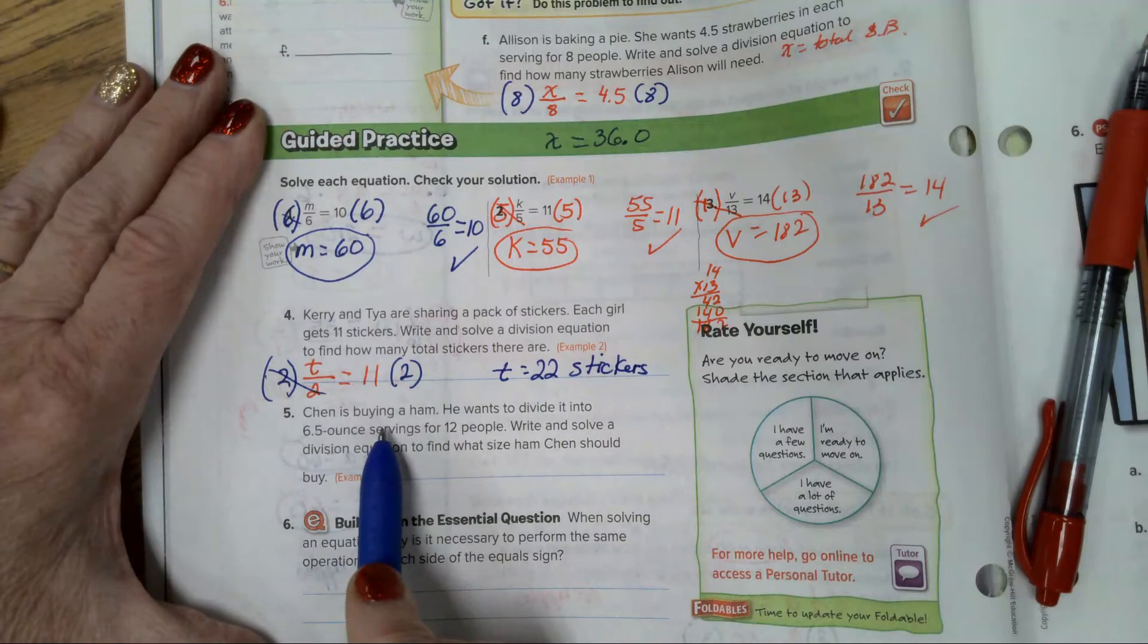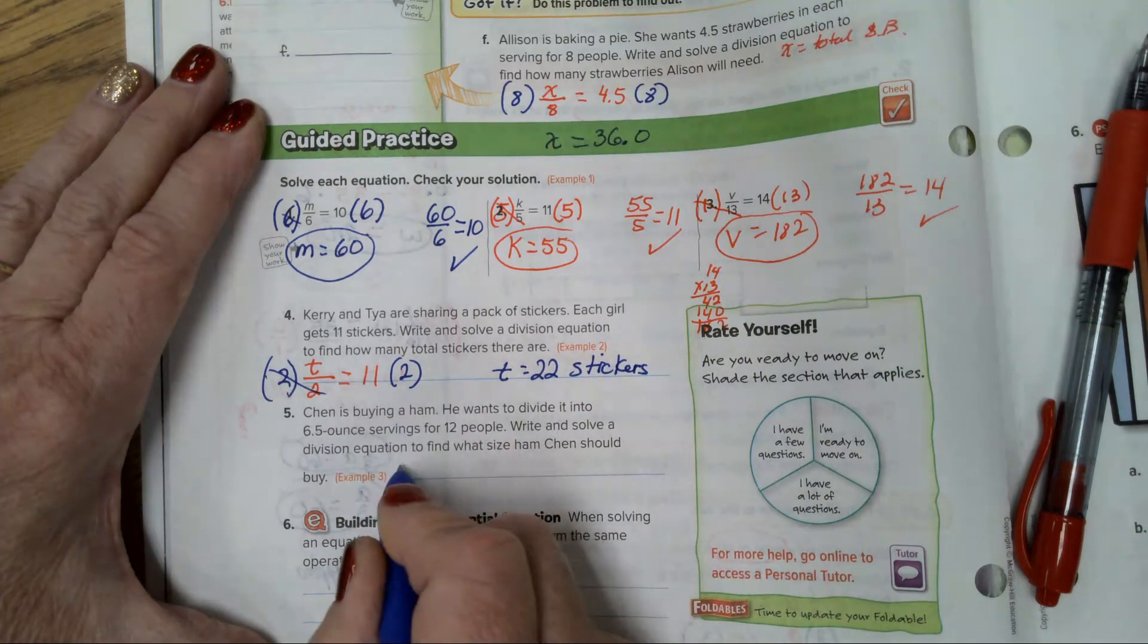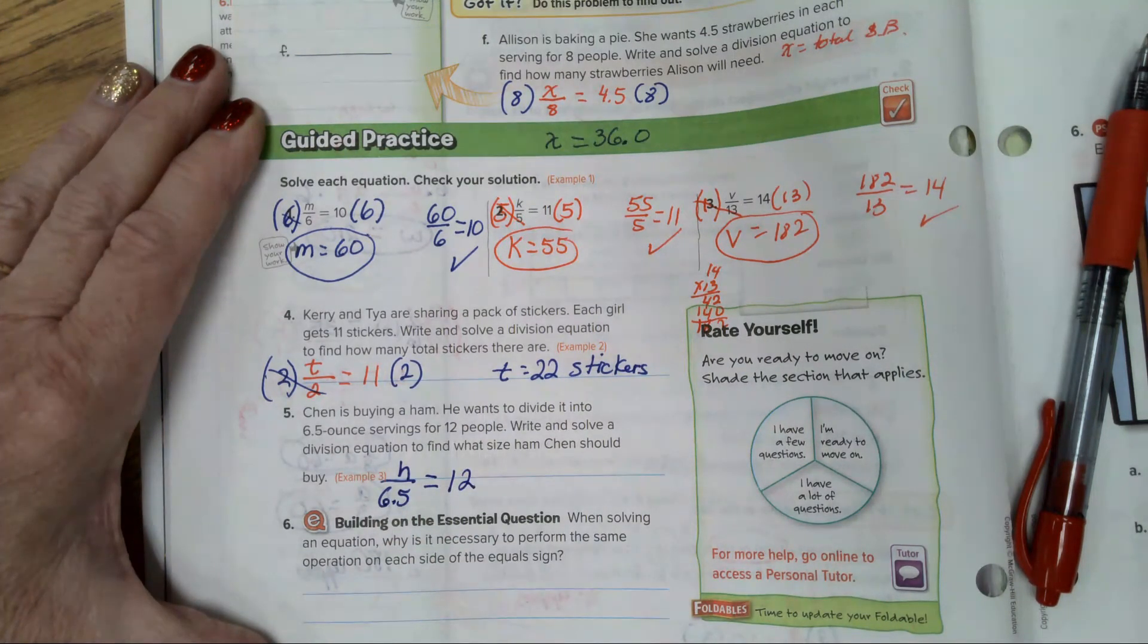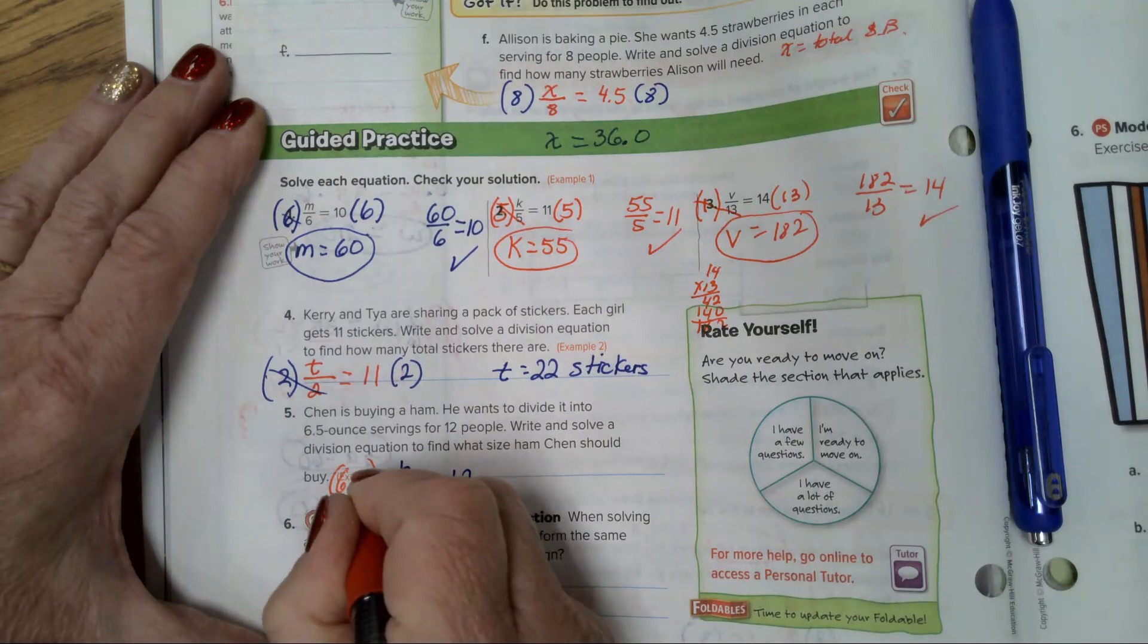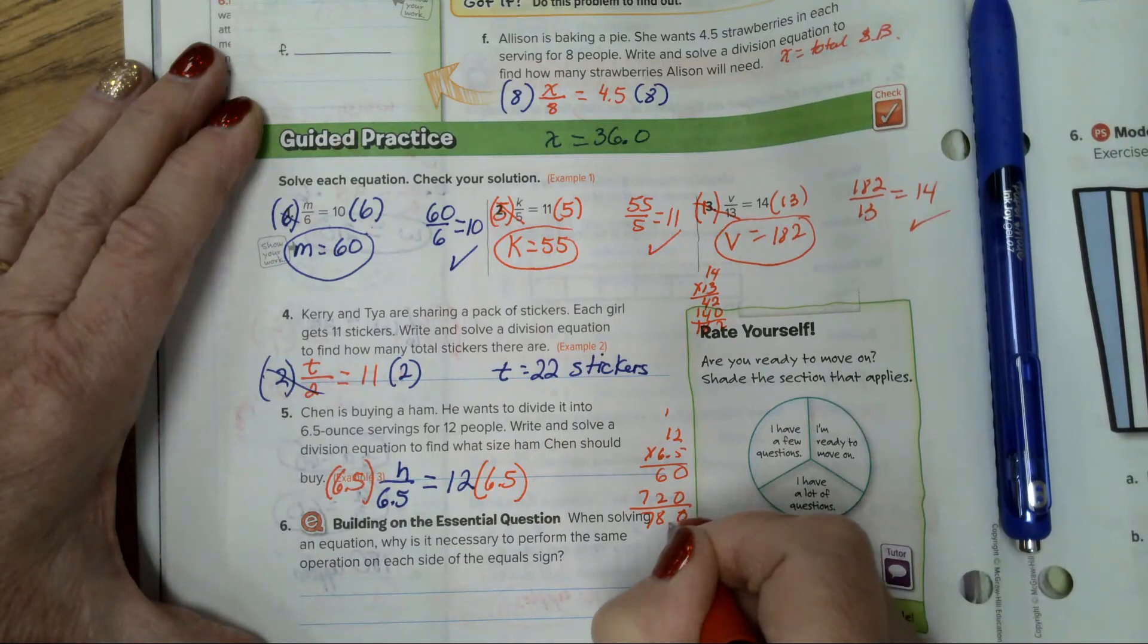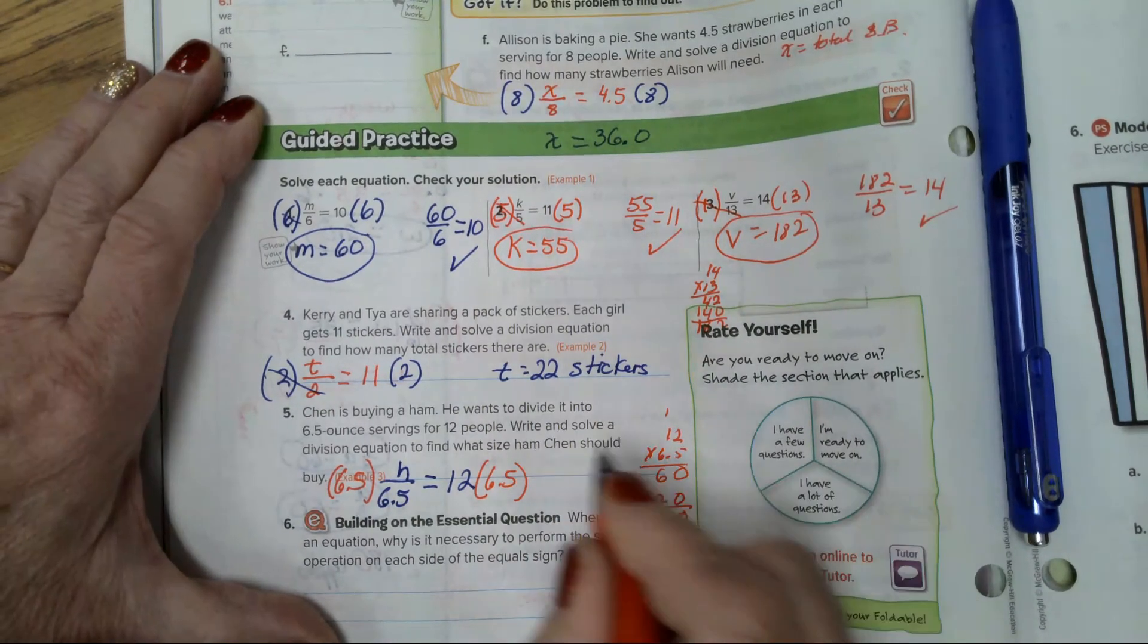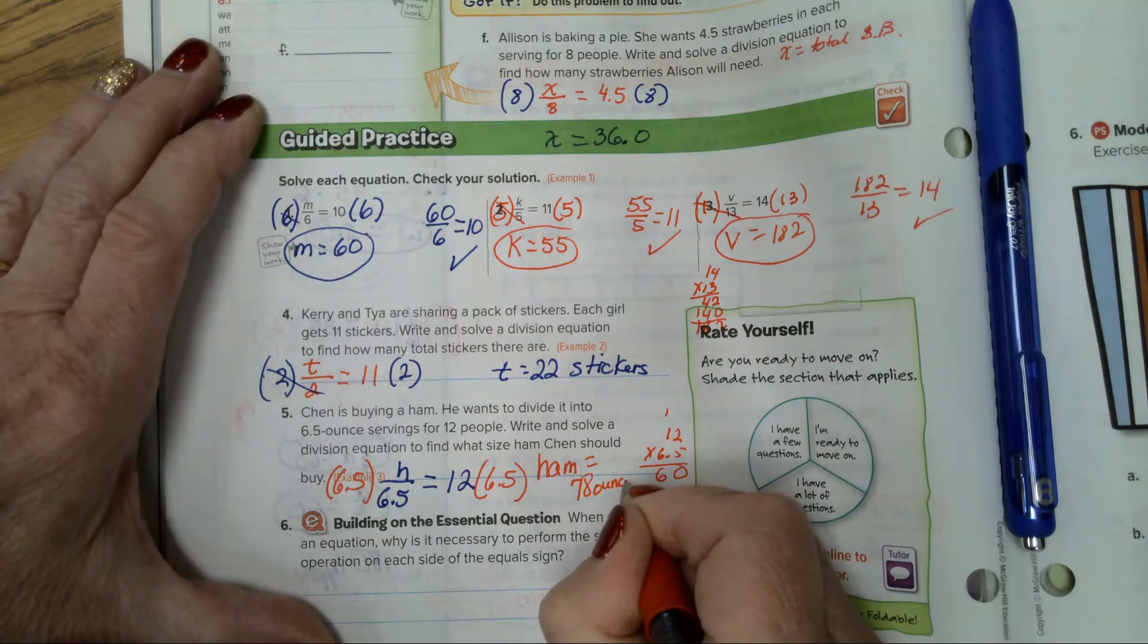And number 5. Chen is buying a ham. He wants to divide it into 6.5 ounce servings for 12 people, right? And solve a division equation to find what size of ham Chen should buy. So the ham divided by 6.5 ounces will be enough for 12 people. How big of a ham must we get? To figure the answer, you multiply 6.5 times 12. You're going to multiply both sides by 6 and 5 tenths. And when you take 12 times 6.5, 78. So you will need 78 ounces. Ham equals 78 ounces.